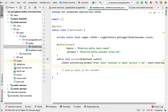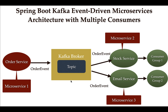We have created the order consumer which will consume messages or events from the Kafka topic. Looking at the architecture, we have now configured the Kafka consumer in the email service. In the next lecture, we'll run all the microservices and see the complete demo — how the order service sends the event to the Kafka topic and how both consumers read from it.